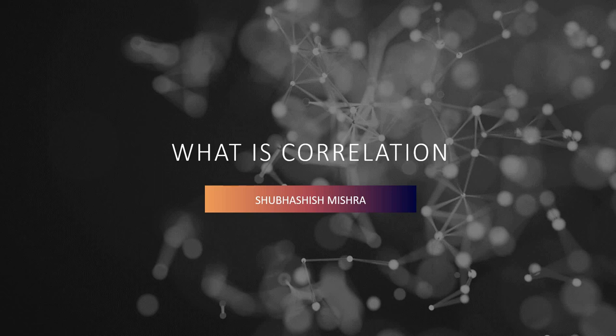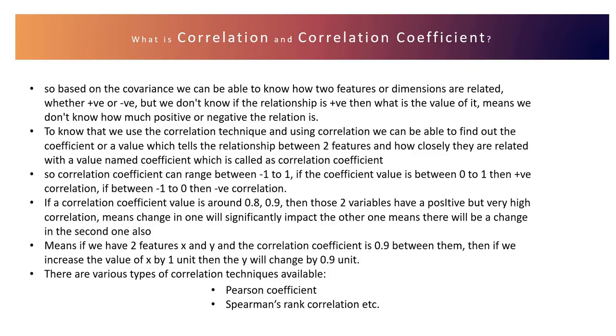Here we find a correlation coefficient, which gives us the relationship between x and y as a value. It tells us not only if they are positively or negatively correlated, but also how much. The correlation coefficient can range between minus one to one.